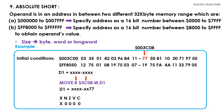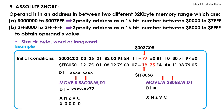Now consider the instruction MOVE.W 8058.W, D1. Notice that when 8058.W is used, the microprocessor will point to address FF8058 to obtain the operand even though we did not specify the address to be FF8058. This is because 8058 is a 16-bit address that lies between addresses FF8000 and FFFFFF. This in turn causes the microprocessor to pack the higher bits of 8058 with 1s, resulting in a 32-bit address value which is FF8058. The dot W after the mnemonic MOVE tells the microprocessor that a word is to be moved. Thus, the data at FF8058 and FF8059 is moved to register D1. Since the data moved is 1975, and 1975 is a positive signed number that is not 0, the status register is updated as X0000.